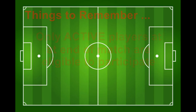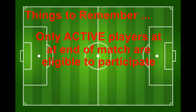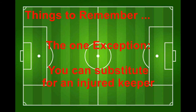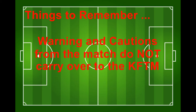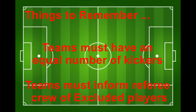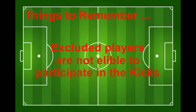Some things to remember. Only players who are on the field at the end of the match are eligible to participate in the kicks, and that includes any players temporarily off due to injury or equipment issues. So keep the players on the field and the substitutes off. The one exception is you can substitute a goalie if he or she is not able to continue due to injury. For players that were warned or cautioned during the match, they start the kicks from the mark with a clean slate. But players sent off during the match are not eligible. If either team has less than 11 players at the end of the match, players must be excluded so that teams are equated. Teams should inform the referee of the excluded players and they are not eligible to take part in the kicks.